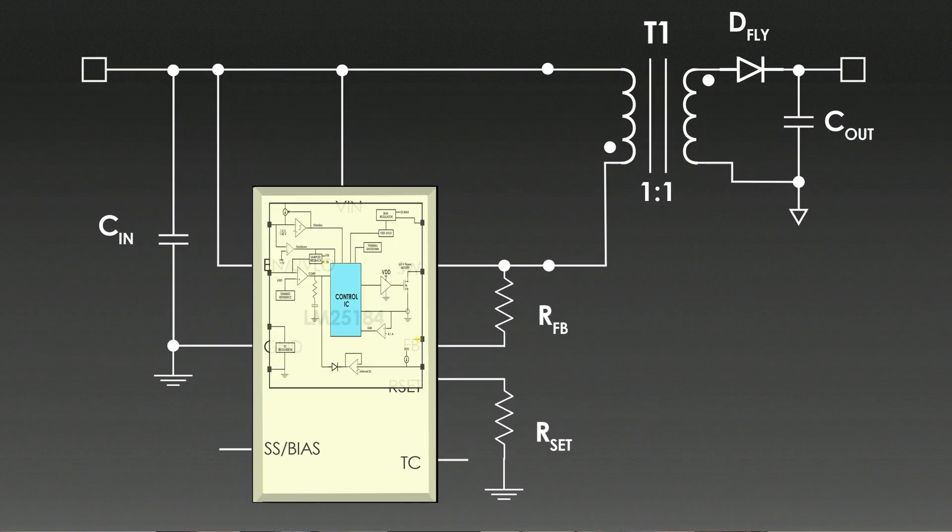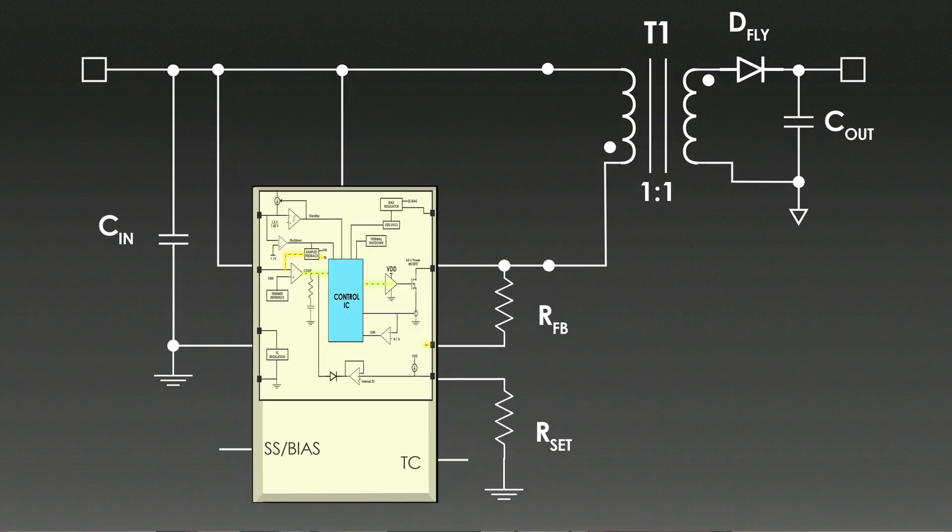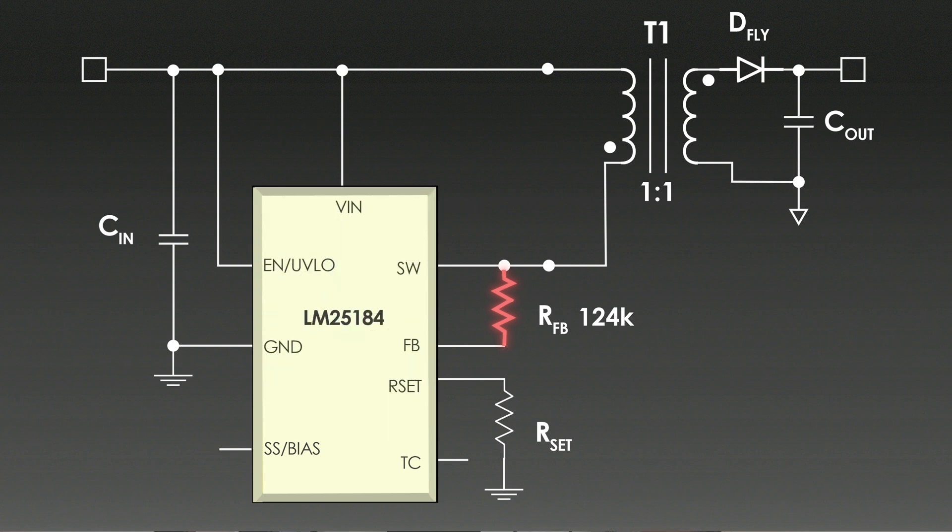But how does this IC make sure we get a stable 12V output? That's where the feedback and control systems come into picture. The resistor RFB takes a sample of the flyback voltage from the transformer and feeds it back to the IC's FB pin. This tells IC how much voltage is being delivered to the output. Then we have RSET and RTC. These resistors are used to fine-tune the output voltage and provide temperature compensation. The compensation in the IC ensures that the output voltage stays within 1.5% accuracy, even as the temperature changes.